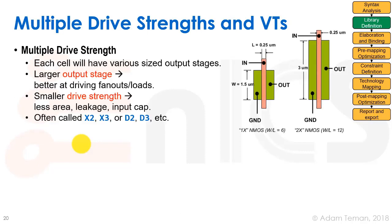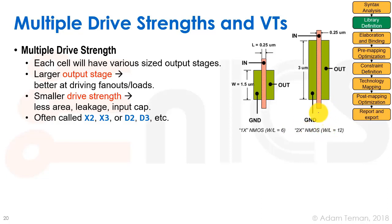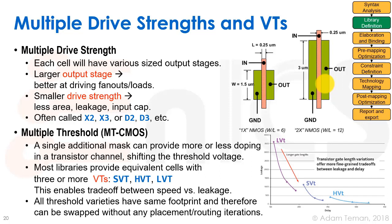Each type of standard cell is usually provided with several drive strengths. For example, one transistor may have a width of 1.5 microns and another 3 microns. The wider transistor drives output better but has more leakage and takes more area. These may be called 1x and 2x, or x1 and x2. In most views, we don't know the actual transistor sizes — we mainly care about propagation delay relative to output load.